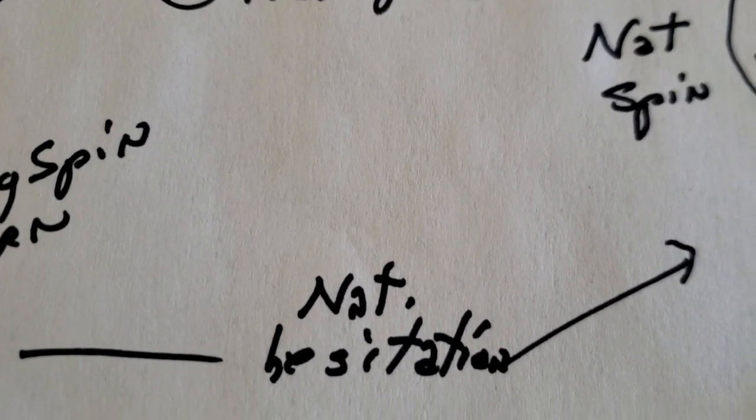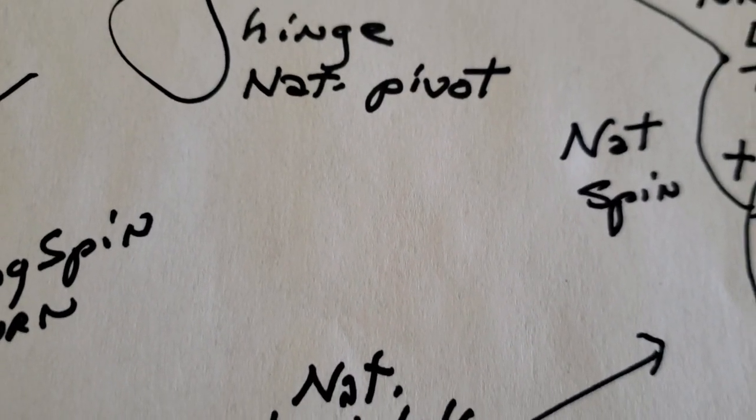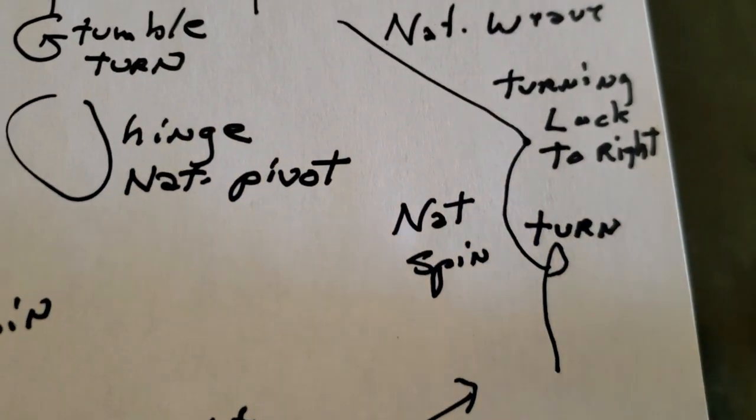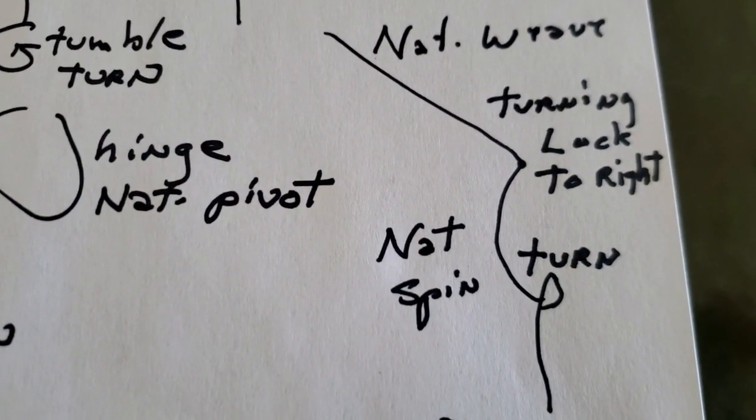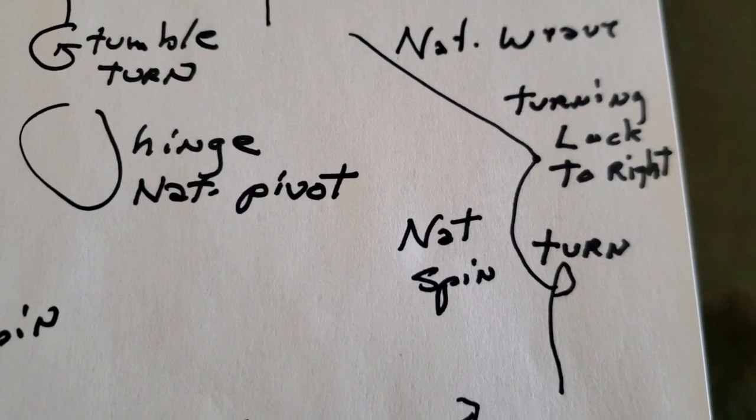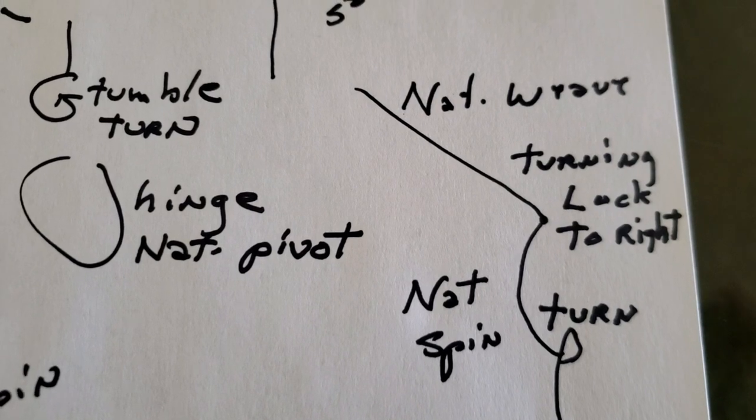So right here, that hesitation there is the second time around. We're starting with just the natural turn into the natural spin turn. So that's the beginning of your long wall, and there's your turning lock to the right—that's the gold turning lock that brings you out into promenade.